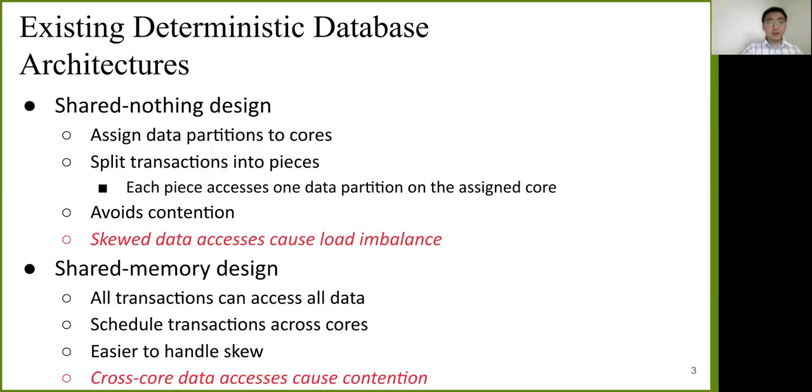There are two ways you can build deterministic databases. The first design is shared-nothing design. In this design, we partition the data, assign data partitions to cores, split transactions into pieces so that each piece acts as only one data partition, and then we schedule these pieces to the assigned core. This design avoids contention, but skewed data access can cause load imbalance and significantly slow down the performance.